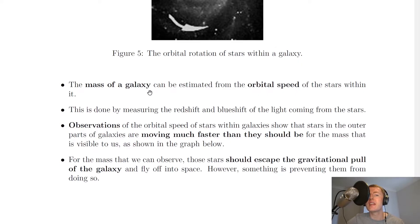It then says that the mass of a galaxy can be estimated from the orbital speed of the stars within it. This is done by measuring the red shift and blue shift of the light coming from the stars. So it seems a bit strange but we can actually get an estimate for the mass of the galaxy from the speeds of the stars.